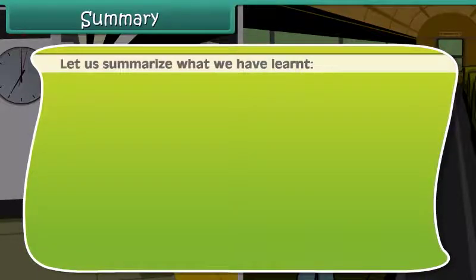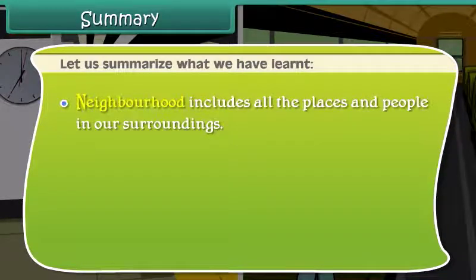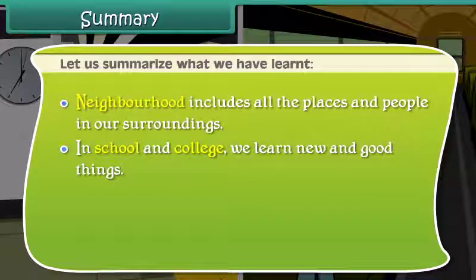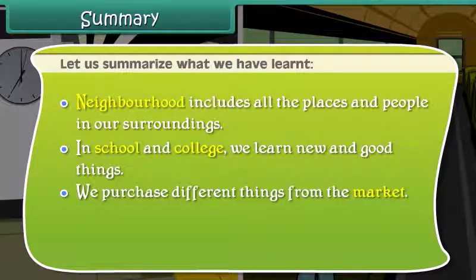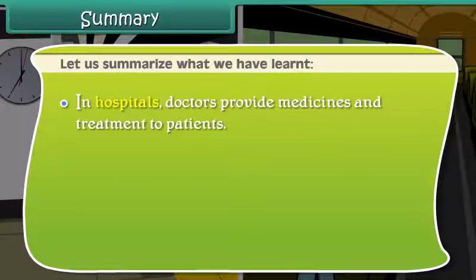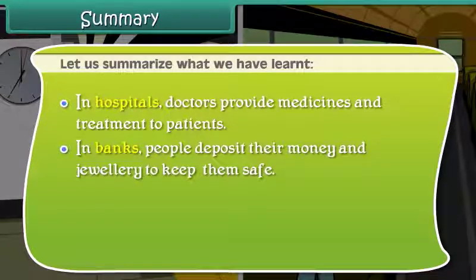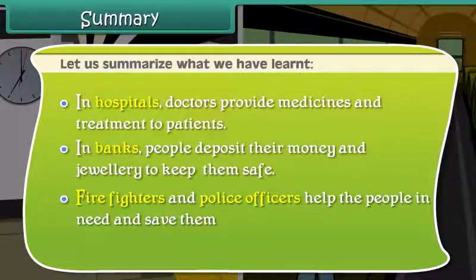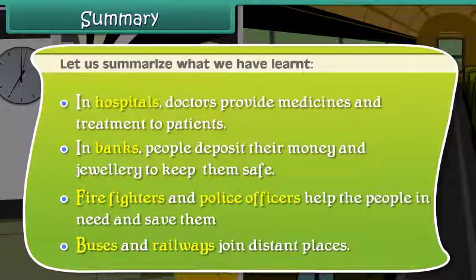Let's summarize what we have learned so far. Neighborhood includes all the places and people in our surroundings. In schools and colleges, we learn new and good things. We purchase different things from the market. People receive and send letters through the post office. In hospitals, doctors provide medicines and treatment to patients. In banks, people deposit their money and jewelry to keep them safe. Firefighters and police officers help people in need and save them. Buses and railways join distant places.